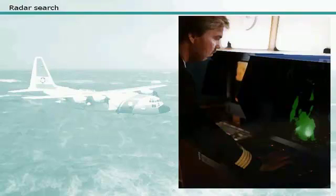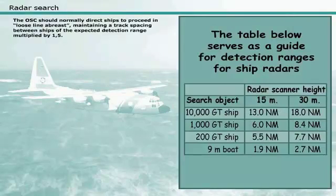When several assisting ships are available, a radar search may be effective, especially when the position of the incident is not reliably known and search and rescue aircraft may not be available. The on-scene coordinator should normally direct ships to proceed in loose line abreast, maintaining a track spacing between ships of the expected detection range multiplied by 1.5.